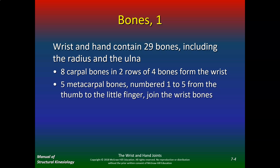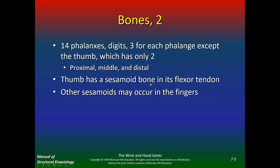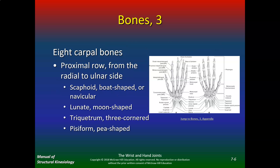Metacarpals are numbered one to five from the thumb — these are great quiz questions. There are 14 phalanges, three for each digit except the thumb which has only two: proximal and distal. The thumb also has a sesamoid bone in its flexor tendon; other sesamoids may occur in the fingers.